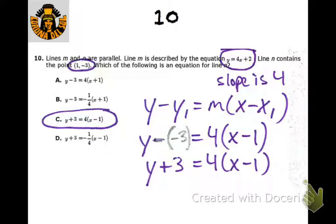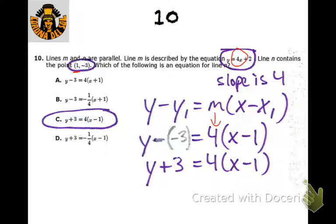Make sure you're really good with slopes and being able to write equations of lines. The slope is 4 — you can tell it's right in front of the x — and there's your point, so we just use point-slope form. So y minus a negative 3 equals the slope 4, times parentheses x minus 1, the x-coordinate. The double negative creates y plus 3.